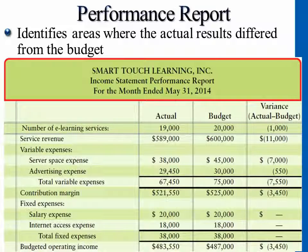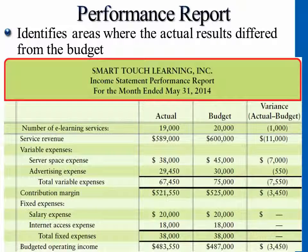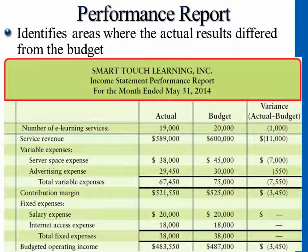Variable expenses will be different because the number of services or the number of sales is different. You were expecting to provide service to 20,000 customers, but at the end you only got 19,000 customers. So you have a lower number of services, lower service revenue, which is why all the variable costs are lower than expected — because variable costs float with sales, float with service revenue.